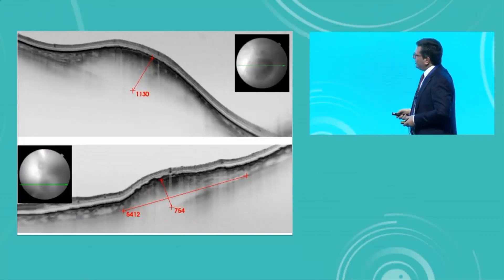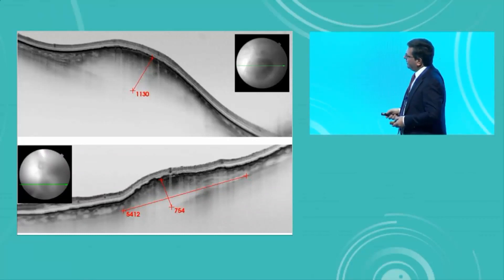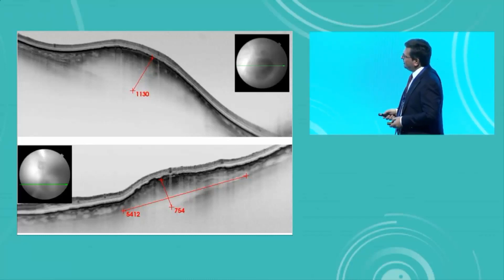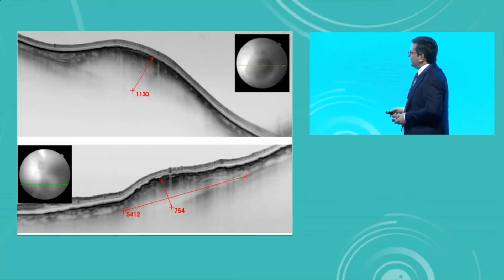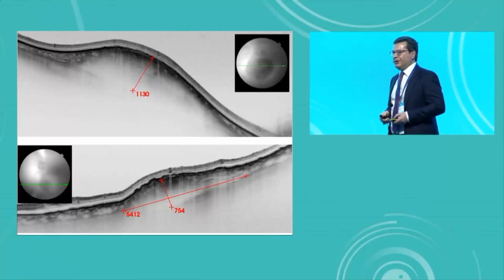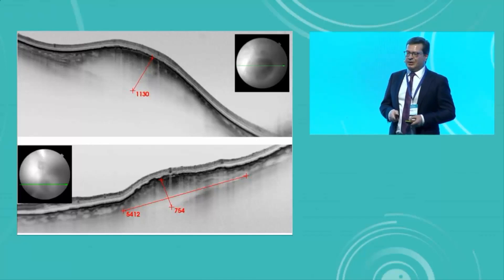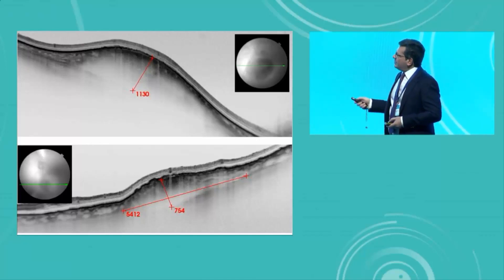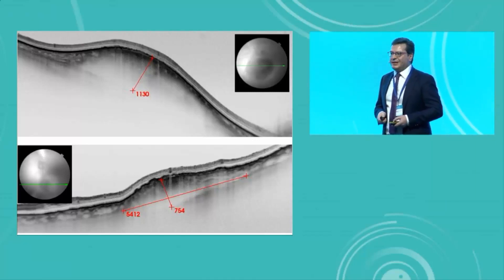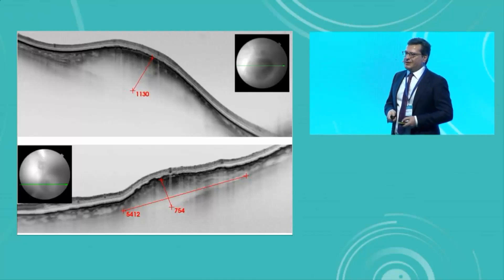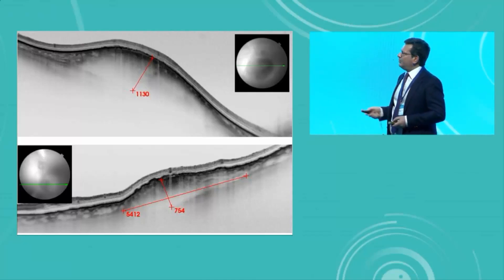Of course, there are other features like alterations of the RPE — the irregular RPE elevation, which is also present in some nevi — but you won't see very progressed alterations within the retina if you have a nevus. The measurement with OCT is, as shown in comparative studies, more precise and accurate than with ultrasonography, because in ultrasonography you will miss certain cases.